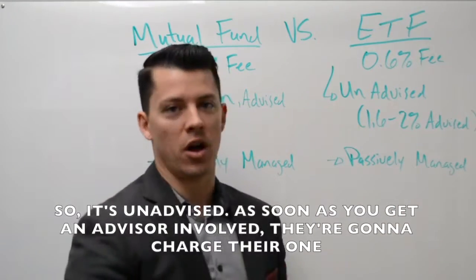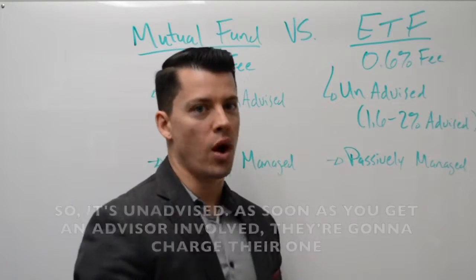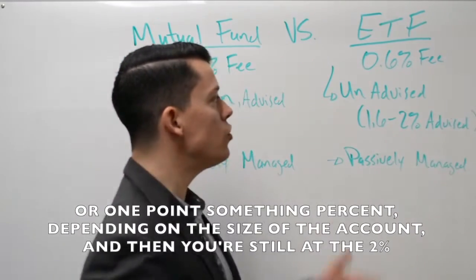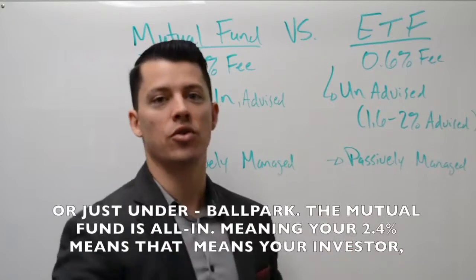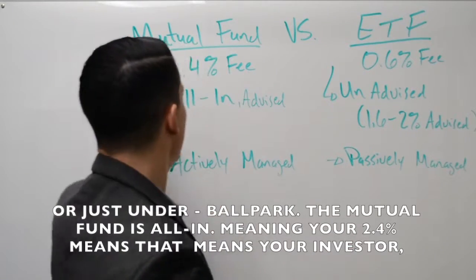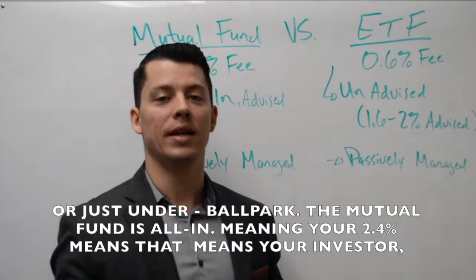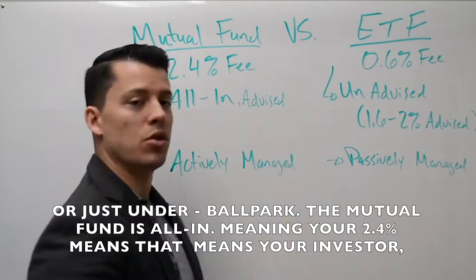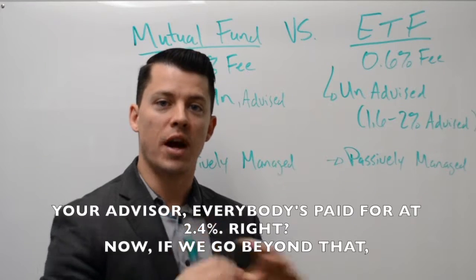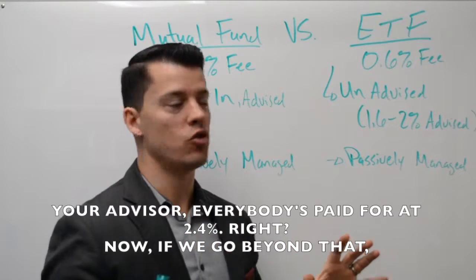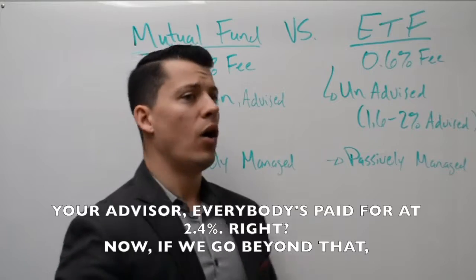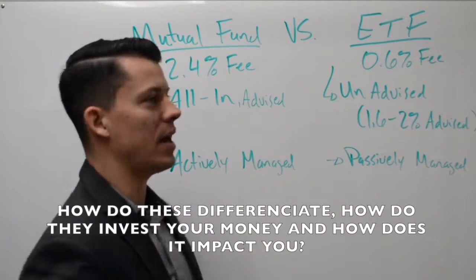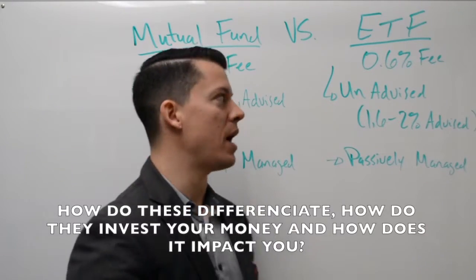As soon as you get an advisor involved, they're going to charge their 1% or so depending on the size of the account, and then you're still at the 2% ballpark. The mutual fund is all-in, meaning your 2.4% covers your investor, your advisor, everybody — all paid for at 2.4%. So how do these differentiate in how they invest your money and how it impacts you?